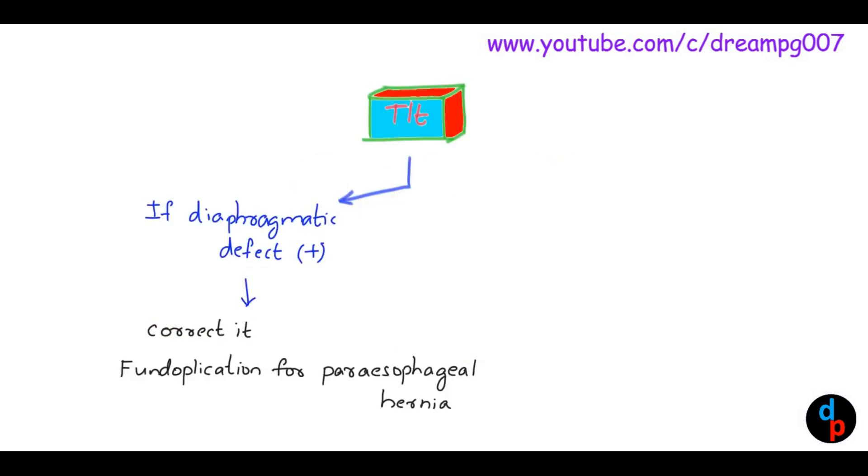Let's have a look into treatment options for gastric volvulus. If diaphragmatic defect is present, we have to correct it first. Fundoplication is done for paraesophageal hernia.